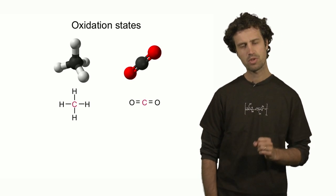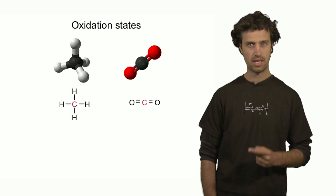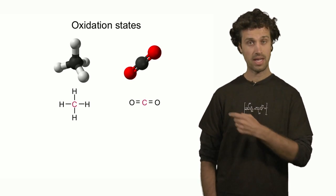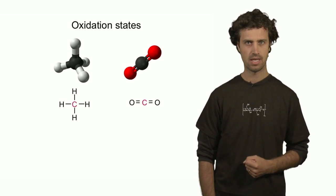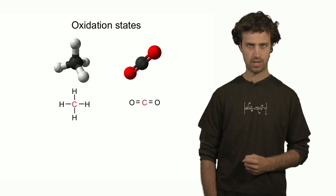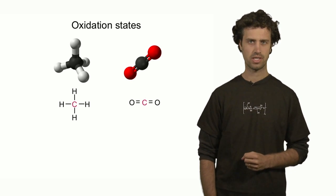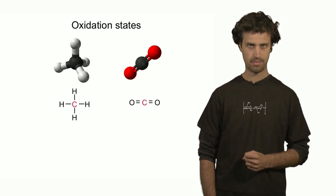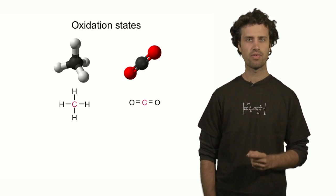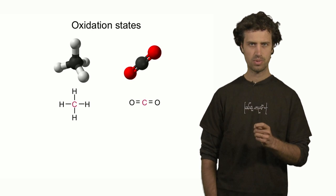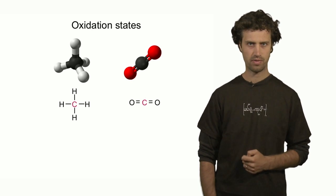So how do we keep track of the differences of the binding electrons in the vicinity of the carbon atom in these two cases? Well, one way in which chemists keep track of such differences is by using a parameter called the oxidation state of an atom. The oxidation state of an atom is a useful tool which can help in following differences in the contributions that the atoms' electrons make to the formation of chemical bonds.